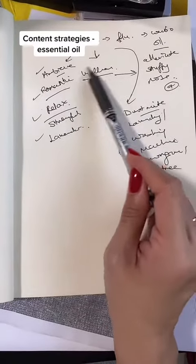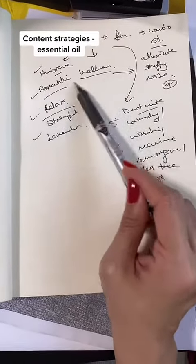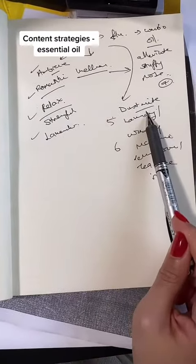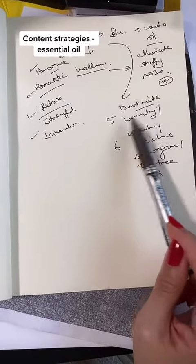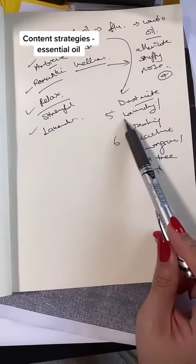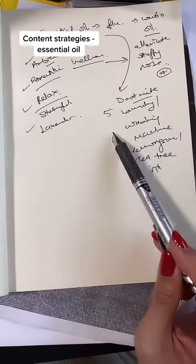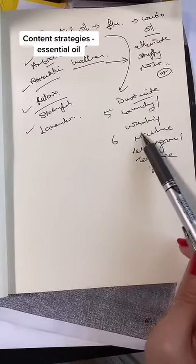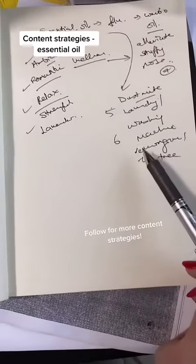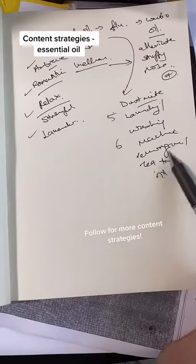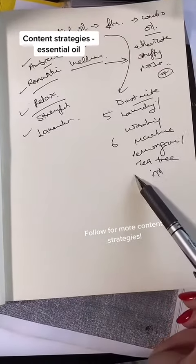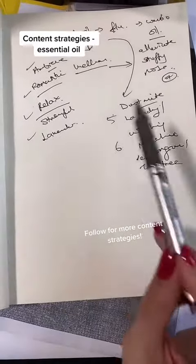You can also think of something wellness-related — like how do you get rid of dust mites when you're washing your clothes or bed sheets. Just use tea tree oil or lemongrass oil, a few drops inside. These are some of the content ideas I create for my clients.